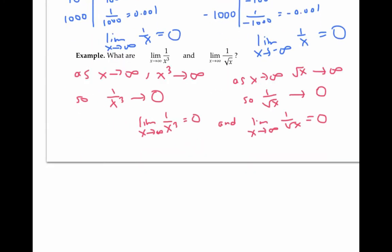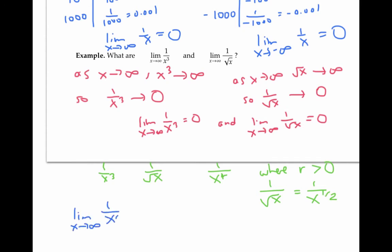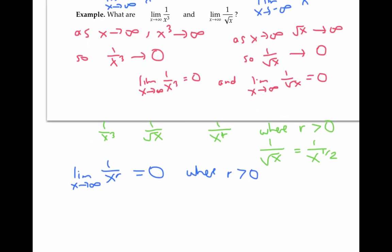These two examples are actually closely related, because one over x cubed and one over the square root of x are both of the form one over x to the r, where r is a number greater than zero. For the square root example, one over the square root of x is one over x to the one half. In general, the limit as x goes to infinity of one over x to the r equals zero, where r is a positive number. In fact, the same is even true for the limit as x goes to negative infinity, as long as you avoid exponents like one half that don't make sense for negative numbers.